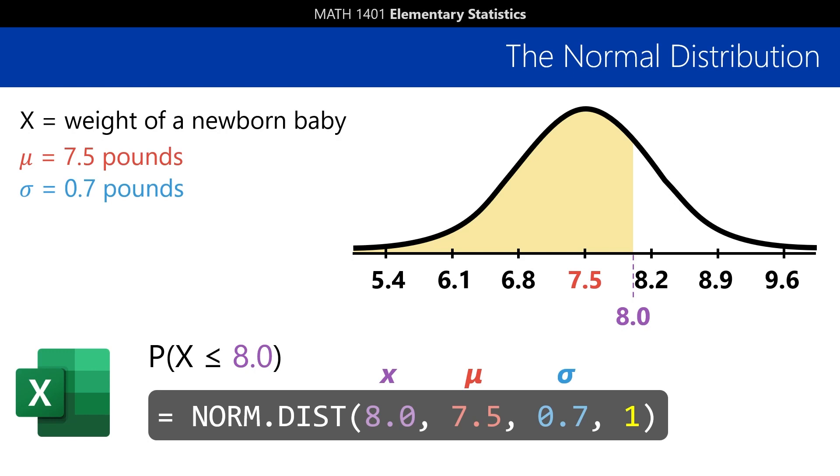If we run that calculation, we get about 0.762, which means that about 76.2% of newborns weigh 8 pounds or less.